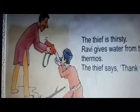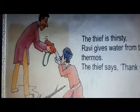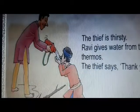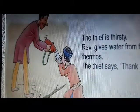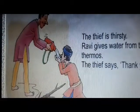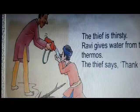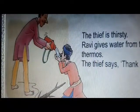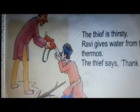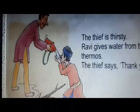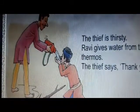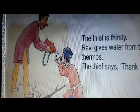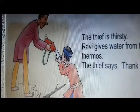We got so many Th sound words in this story — like: thirty, thin, thorn, three, thief, thumb, thread, thrill, thirsty, thermos, thank you — and like this. So now we are going to do the text reading from the books.